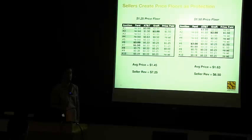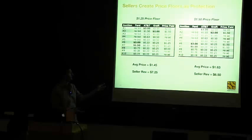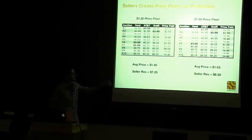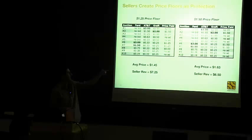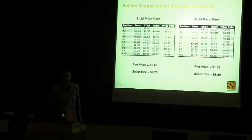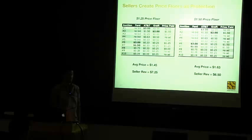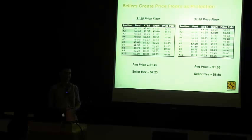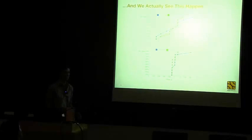But this also becomes a very risky game for sellers. What happens if you set a price floor too high or too low? With a $1.50 price floor, the seller chooses not to show an ad more often. Ford pays more when they actually win, but the seller actually makes less money overall — about $6.50 instead of $7. So setting the price floor is a complicated game that buyers and sellers play — and this actually happens in real life, not just theory.